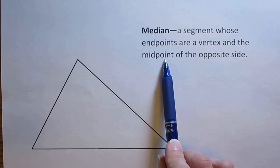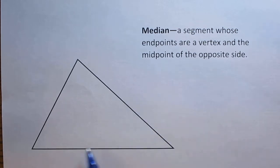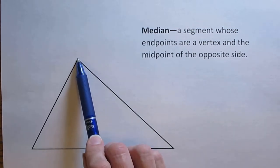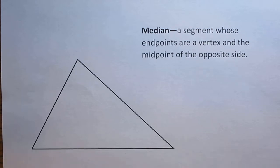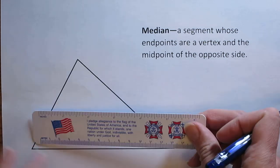I need to find a midpoint of a side and then I'm going to connect it to the vertex that is opposite. In order to find the midpoint I'm going to use a ruler and measure the side.